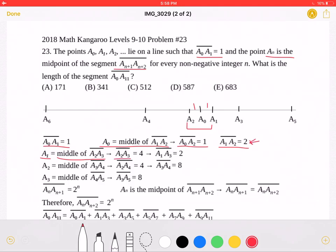So that entire segment must be equal to 4 because a1 is the midpoint, and that also means that segment a1a3 must also be equal to 2.